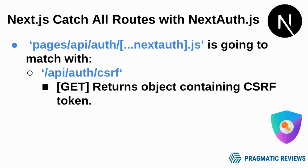Another example: /api/auth/csrf is going to return an object containing a CSRF token. The token returned by this endpoint must be passed as a form variable named csrf_token in all POST submissions to any API endpoint.